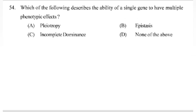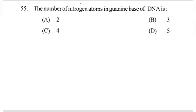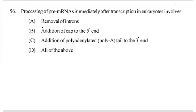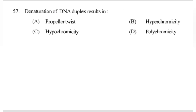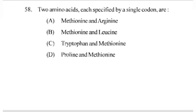Which of the following describes the ability of a single gene to have multiple phenotypic effects? Answer A part: pleiotropy. The number of nitrogen atoms in guanine base of DNA is 4. Processing of pre-mRNAs immediately after transcription in eukaryotes involves all of the above. Denaturation of DNA duplex results in — answer B part: hyperchromicity. Two amino acids each specified by a single codon are — answer C part: tryptophan and methionine.